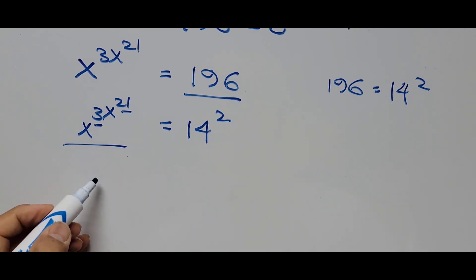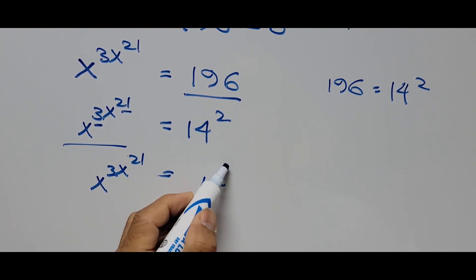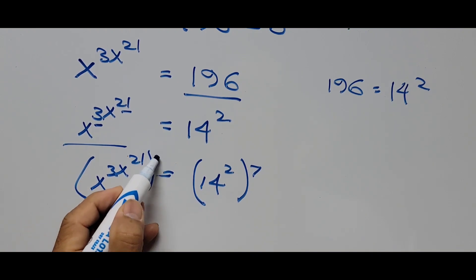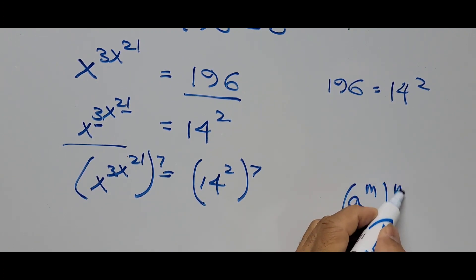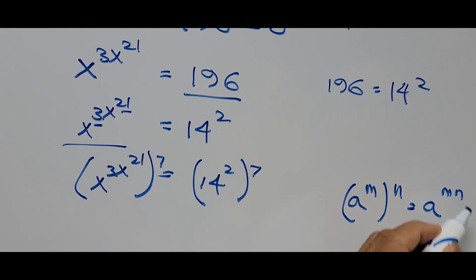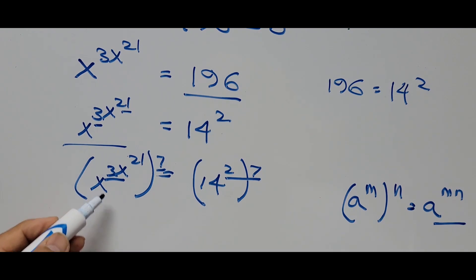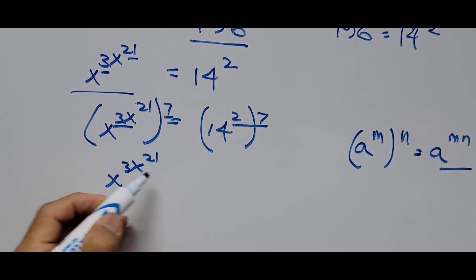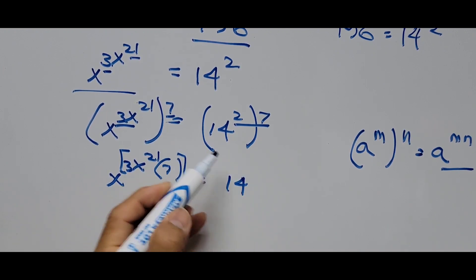So from here, we have x to the 3x to the 21 power equals 14 squared, raising both sides to the 7th power. That means both sides of the equation are raised to the 7th power, or exponent 7. We're using the law of exponents: a raised to m raised to n equals a raised to m times n. So we multiply the exponents. This becomes x raised to 3x raised to 21 times 7, equals 14 raised to 7 times 2, which is 14.